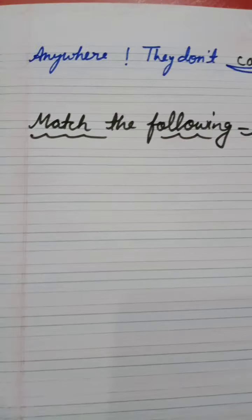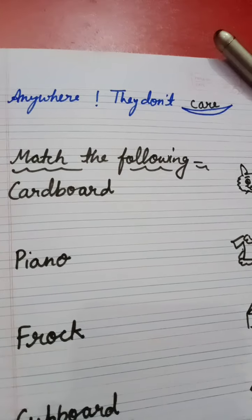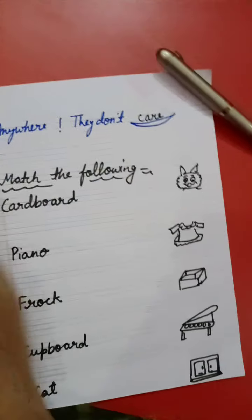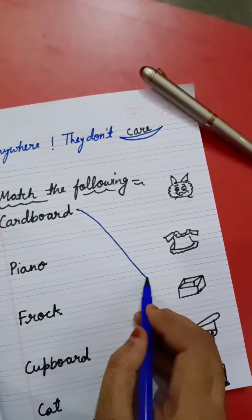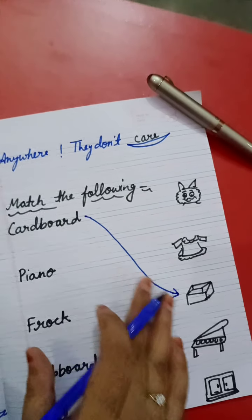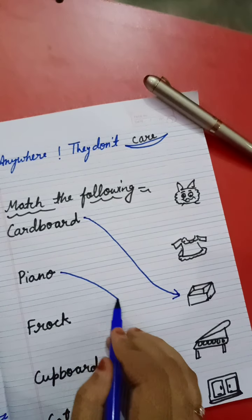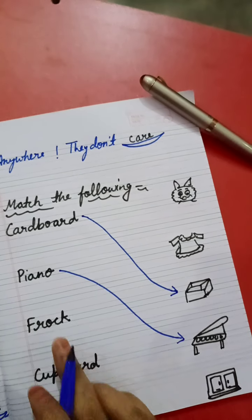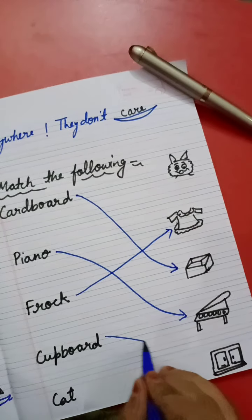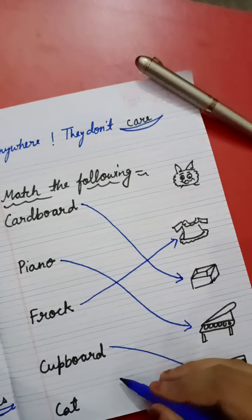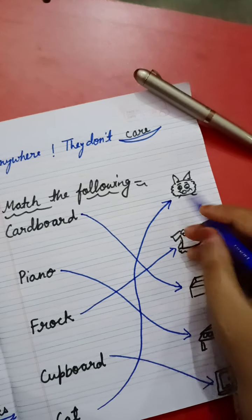Our next exercise is match the following — match the words with the correct picture using different colors. First is 'cardboard,' which means box. Next is 'piano,' a musical instrument. 'Frog' is a dress. 'Cupboard' means almirah. And 'cat' — use different colors so it is very easy to identify.